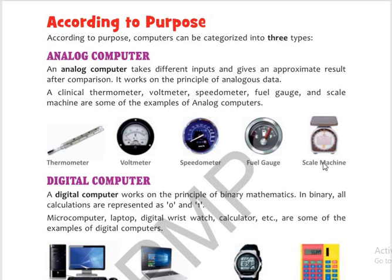Examples of analog computers are: clinical thermometer, voltmeter, speedometer, fuel gauge, and scale machine. Regarding the thermometer — when we have a fever, the doctor puts the thermometer in our mouth for just two minutes to get an accurate reading, because our body temperature goes up and comes down. It is not constant; it may rise or decrease.